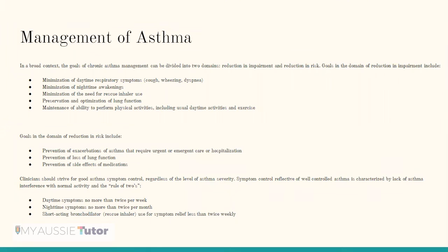Moving on to management of asthma: the goals of chronic asthma management can be divided into two domains — reduction in impairment and reduction in risk. Goals in the domain of reduction in impairment include minimization of daytime respiratory symptoms such as coughing, wheezing, and dyspnea; minimization of nighttime awakenings; minimizing the need for rescue inhaler use; preserving and optimizing lung function; and maintaining the ability to perform physical activities. Goals in the domain of reducing risk include prevention of exacerbations requiring urgent or emergency hospitalization, prevention of loss of lung function, and prevention of medication side effects. Well-controlled asthma is characterized by daytime symptoms no more than twice per week, nighttime symptoms no more than twice per month, and short-acting bronchodilator use less than twice weekly.